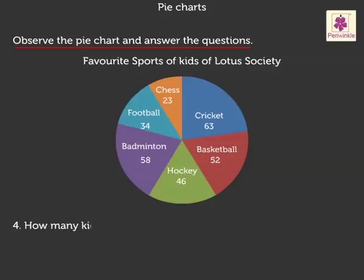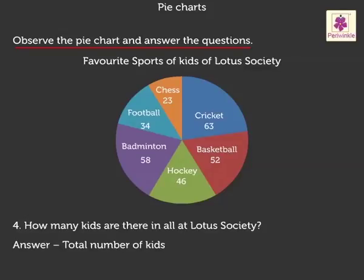Question four: how many kids are there in all at Lotus Society? We find the total number of kids: 63 plus 52 plus 58 plus 46 plus 34 plus 23, which is equal to 276. So we say there are 276 kids in all.